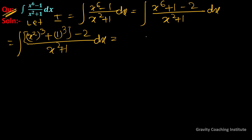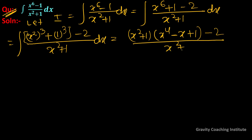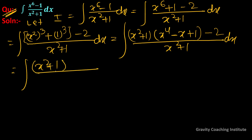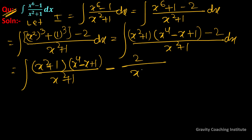Using the a cube plus b cube product form, this becomes (x square plus 1) into (x to the power 4 minus x plus 1), minus 2 upon (x square plus 1), integration dx. And if we separate this, it becomes (x square plus 1) into (x to the power 4 minus x plus 1) upon (x square plus 1), minus 2 upon (x square plus 1) dx. So here (x square plus 1) cancels out.